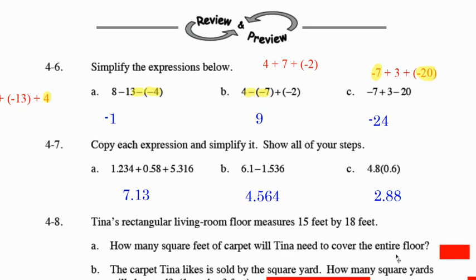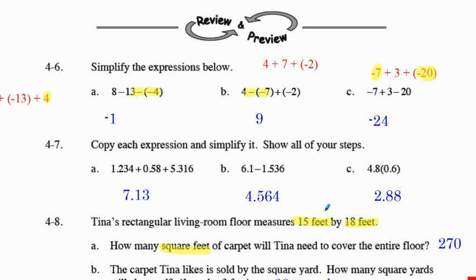How many square feet of carpet will she need to cover the entire floor? You're going to take 15 times 18 and get 270 square feet. The carpet she likes is sold by the square yard — how many square yards does she need? The easiest way is to convert feet to yards: 15 feet becomes 5 yards, 18 feet becomes 6 yards. 5 yards times 6 yards gives us 30 square yards. The other way you could do it is divide by 9, since you're converting both dimensions from feet to yards.